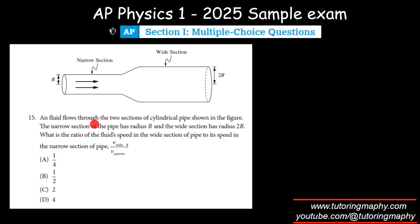A fluid flows through the two sections of cylindrical pipe shown in the figure. The narrow section of the pipe has radius r, wide section has 2r. What is the ratio of fluid speed in the wide section to the narrow section? So the equation of continuity